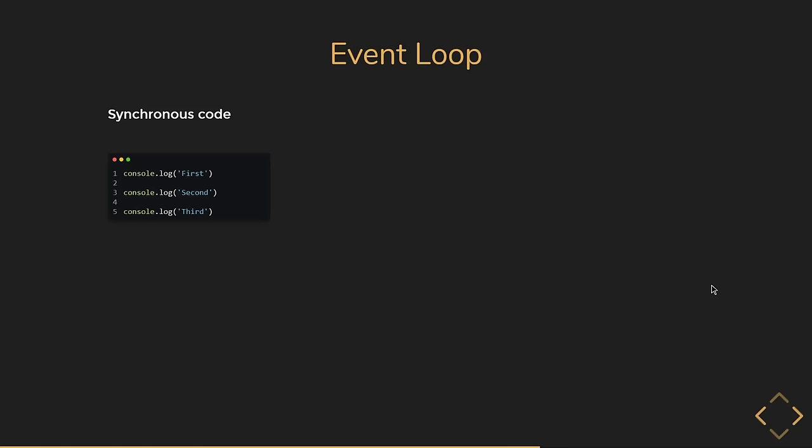This is how synchronous code execution can be visualized with the JavaScript runtime. We haven't talked about web APIs, callback queue, or event loop yet because those are not needed for synchronous code. But understanding how the call stack works is really important to understanding asynchronous code as well.